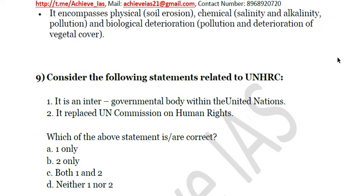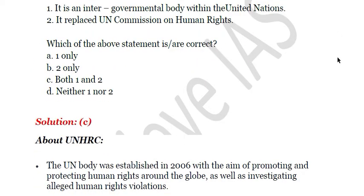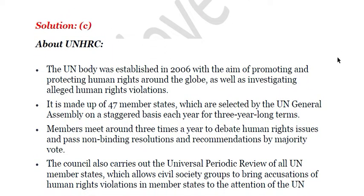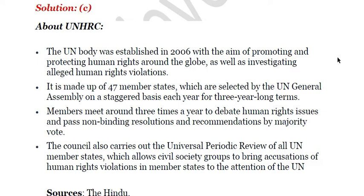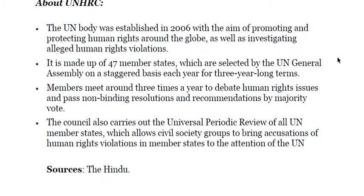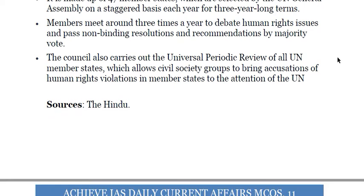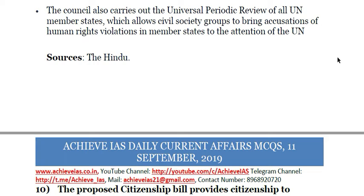The next question: consider the following statements related to UNHRC — the United Nations Human Rights Council. First, it is an intergovernmental body within the United Nations. Second, it replaced the UN Commission on Human Rights. The answer is C — both statements are correct. It was established in 2006 with the aim of promoting and protecting human rights around the globe, as well as investigating alleged human rights violations. It is made up of 47 member states selected by the UN General Assembly on a staggered basis for three-year terms. Members meet around three times a year to debate human rights issues and pass non-binding resolutions by majority vote. It also carries out a Universal Periodic Review of all UN member states.